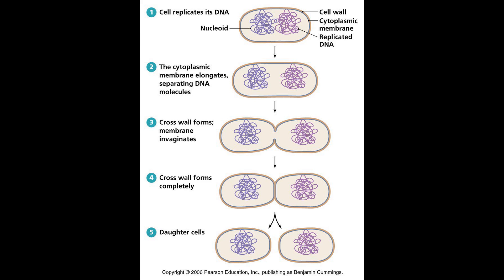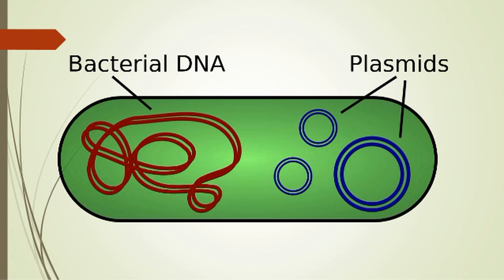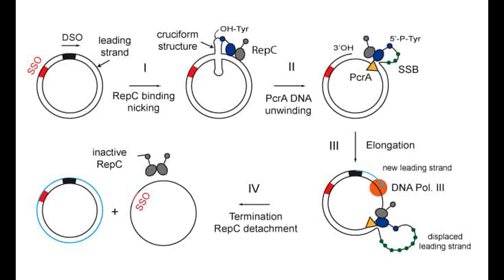Prokaryotes undergo a type of cell division during which they roughly double their volume before splitting in two. This is called binary fission. Prokaryotes usually carry most of their genes on a single, circular chromosome, part of the cell's nucleoid, and often have several smaller sections of DNA called plasmids. Prokaryotic genomes are circular and are copied from a single origin of replication — this is true for chromosomes as well as plasmids.